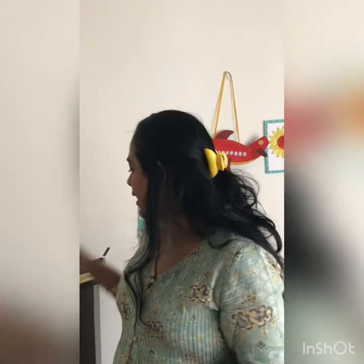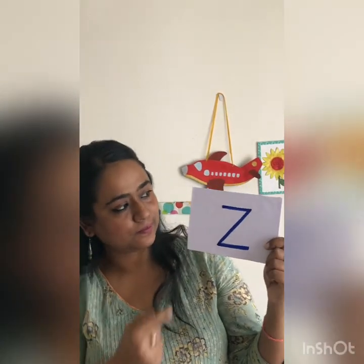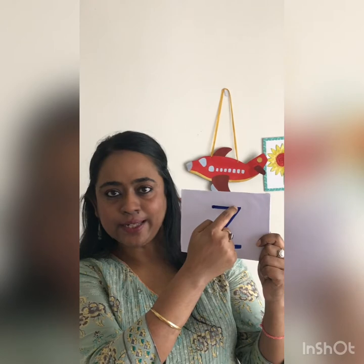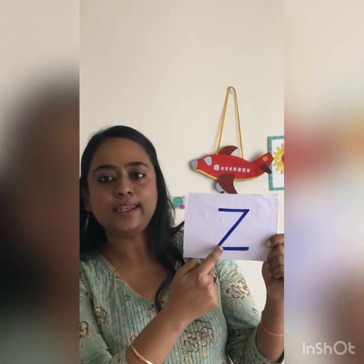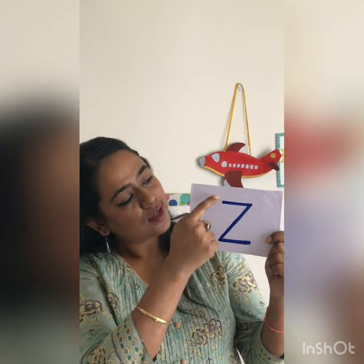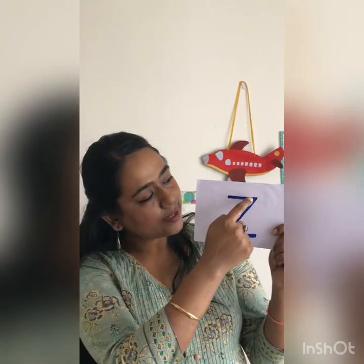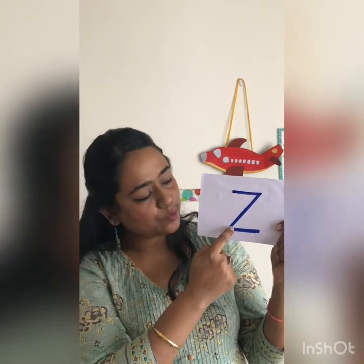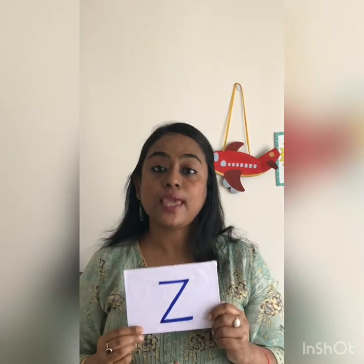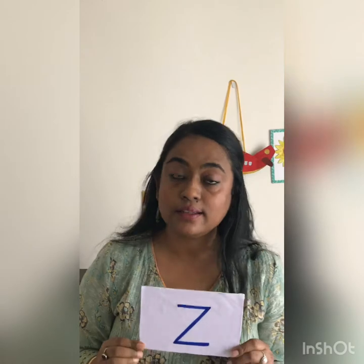So how do we write letter Z? Sleeping line, slanting line, and a sleeping line. Sleeping line, slanting line down, and then a sleeping line — that makes letter Z! You can practice writing letter Z in your notebook.